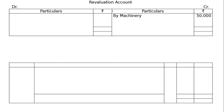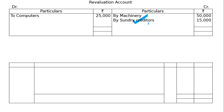First entry: machinery — book value se revised value ho gayi — by machinery, increase in asset — credit side mein hota hai. Increase in asset is debited. Computer asset decrease kar raha hai, toh 2 computers 25,000. Liability ghat gayi toh hamara income ho gaya — by creditors 15,000. Then outstanding expenses is liability badh rahi hai 10,000 — increase in liability debit side mein aayega — to outstanding expenses 10,000.